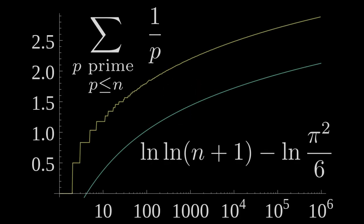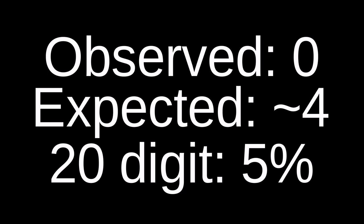So just how unlucky are we that we haven't found one yet? Well, only a little. The sum of 1 over the primes goes off to infinity very slowly. Since we've searched up to 20 digit numbers, statistically we should have found about 4 of them, and there's about a 5% chance that there's one that's exactly 20 digits long.